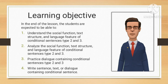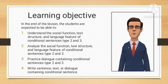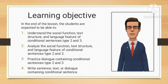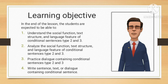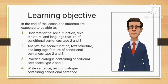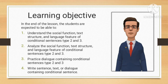In the end of the lesson, students are expected to be able to: 1. Understand the social function, text structure, and language features of conditional sentences type 2 and 3. 2. Analyze the social function, text structure, and language features of conditional sentences type 2 and 3. 3. Practice dialogue containing conditional sentences type 2 and 3.